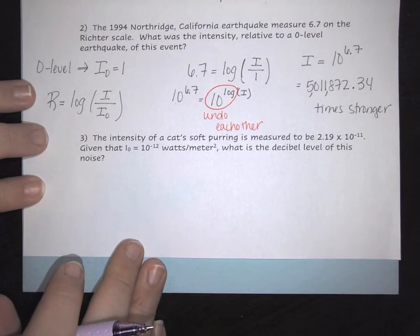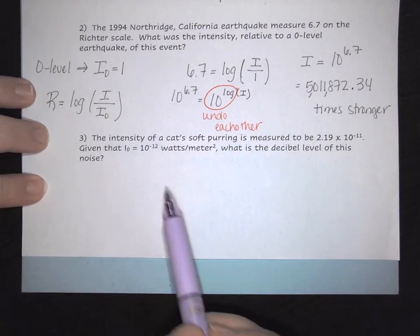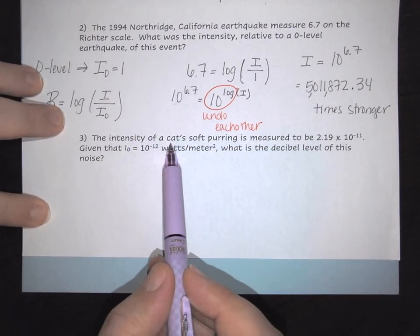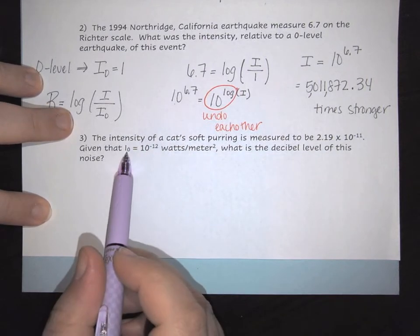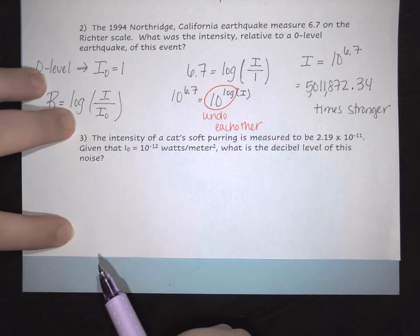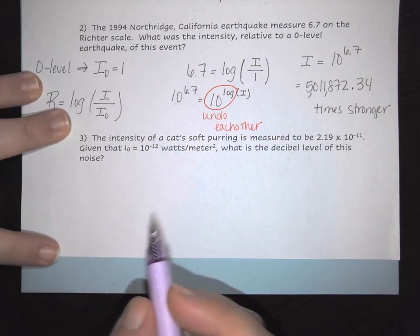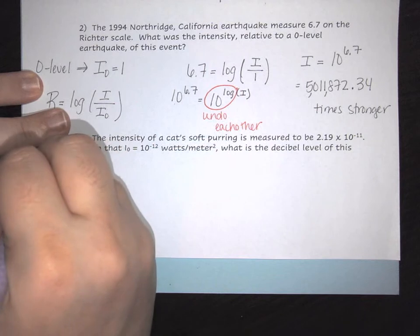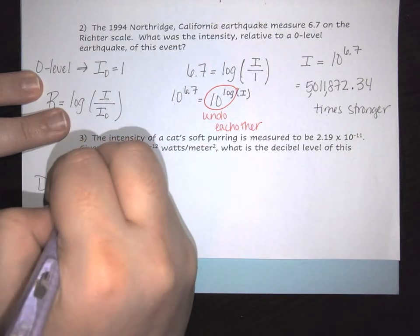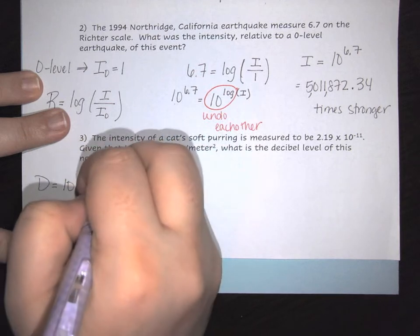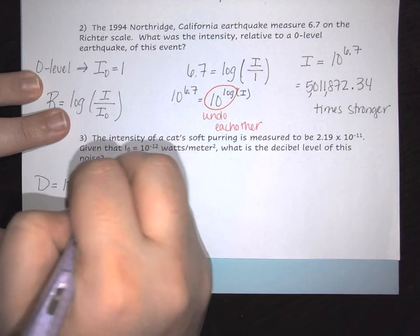The last example deals with the intensity of a cat's purring, measured to be 2.19 times 10 to the negative 11. Given that the initial intensity is 10 to the negative 12, what is the decibel level of the noise? Here, we use 10 times the log of your intensity over the initial.